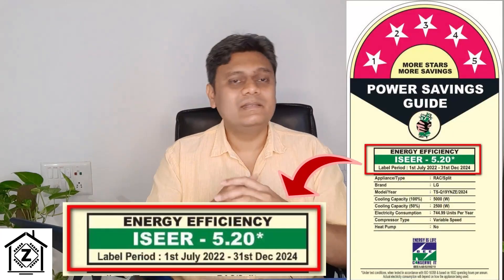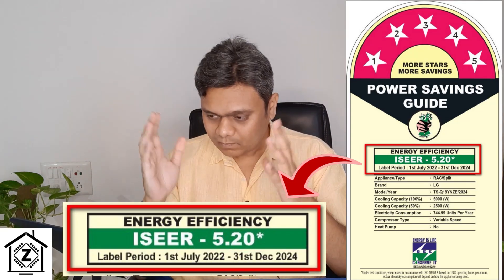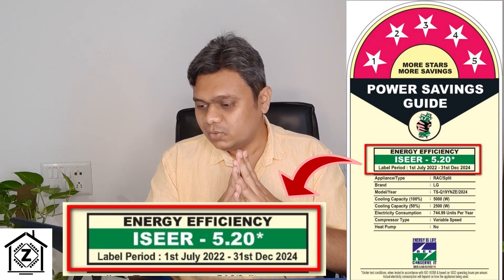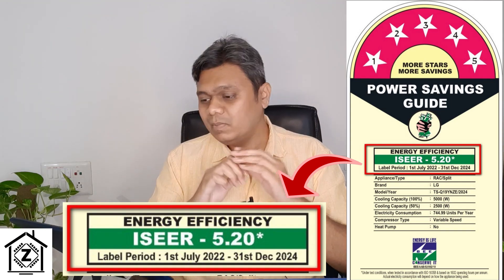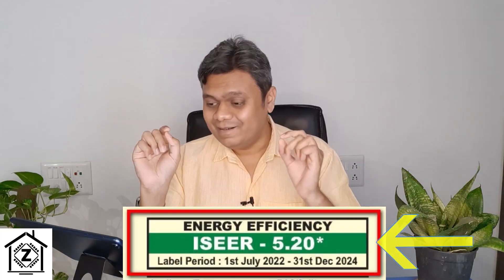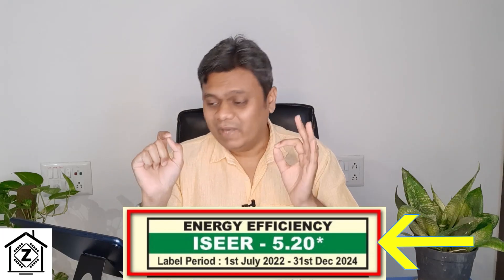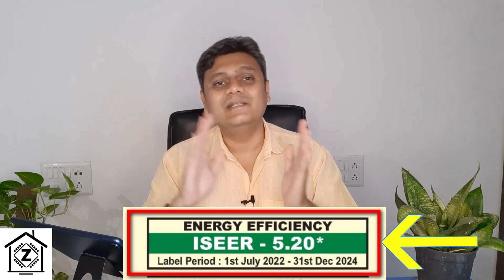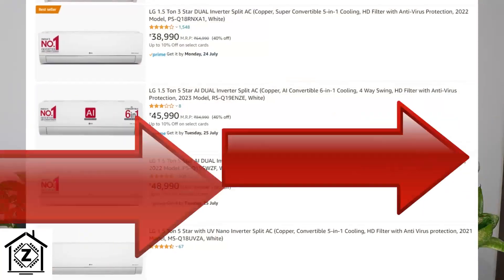Let's take a look at the next point: label period. In this example you can see that the label is valid from 1st July 2022 to 31st December 2024. Next year there will be a new label — new year, new label 2025, something like that. What you need to keep in mind when buying an AC — for example in summer 2024, June or July — make sure that the validity period is at least till December 2024. Don't buy any kind of AC which has an outdated or expired sticker.